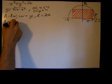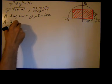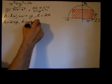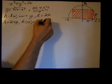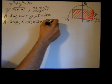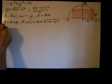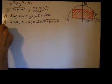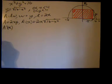Substituting for y, the area in terms of x equals 2x times the square root of 16 minus x squared. Now we can take the derivative — that's the optimization process — to find the derivative of this area function, A prime.